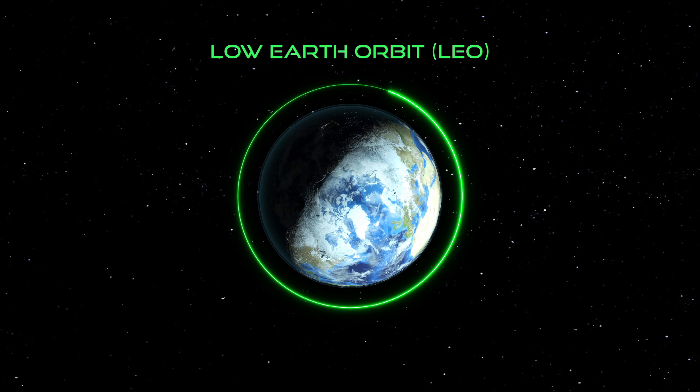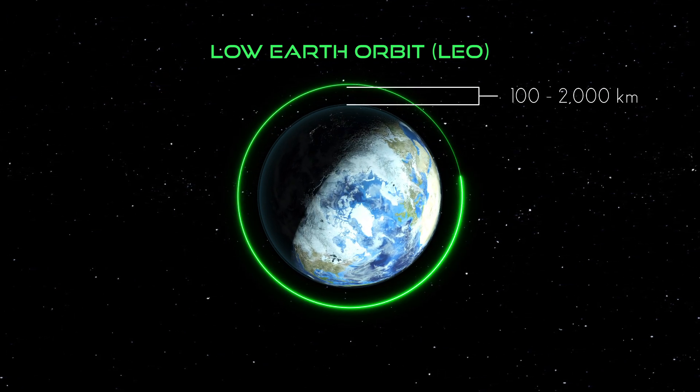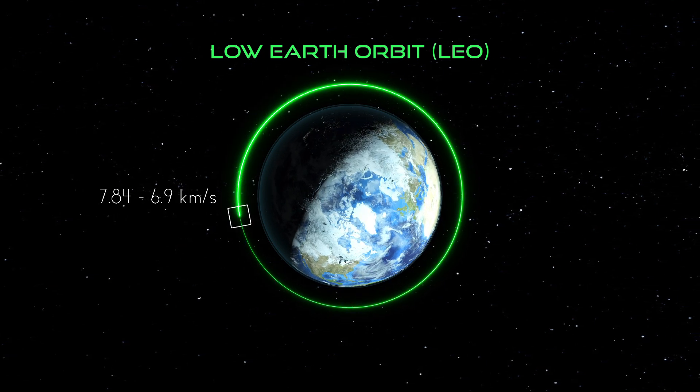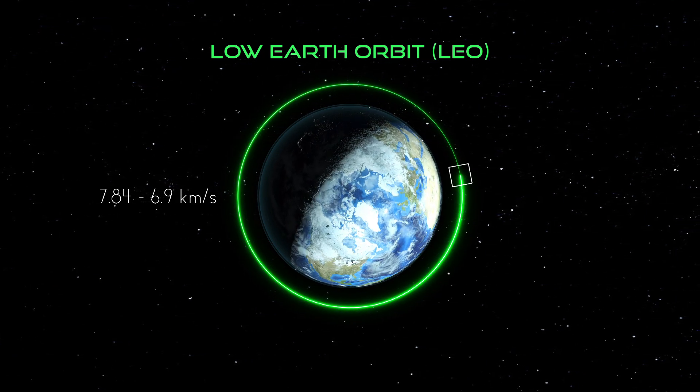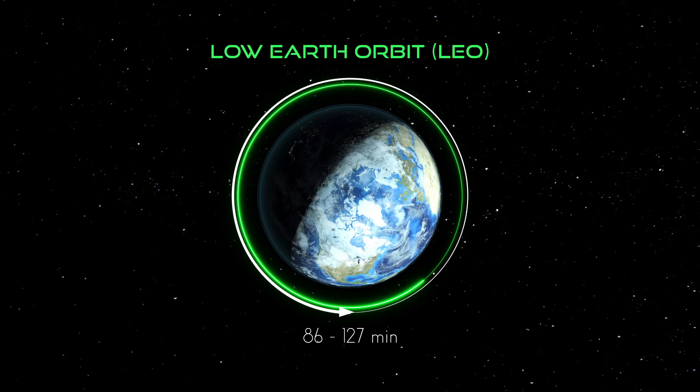LEO, MEO, and GEO orbit types are typically circular — that is, they have an eccentricity close to zero. For low Earth orbit, there is no hard and fast altitude that defines this orbit type. It generally ranges from 100 to 2,000 kilometers, resulting in orbital velocities ranging from 7.84 to 6.9 kilometers per second, and periods ranging from 86 to 127 minutes.